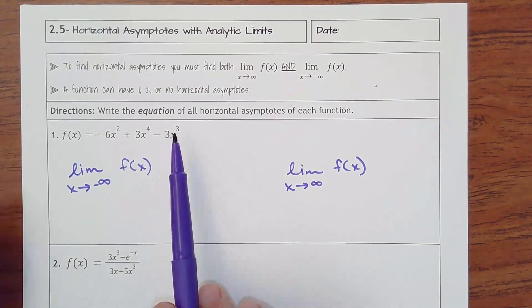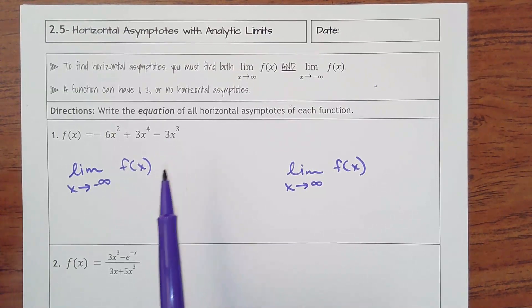Functions can have one, two, or no horizontal asymptotes, because to the left could be a horizontal asymptote, to the right could be a horizontal asymptote, one or the other, none. Can't have more than two though.